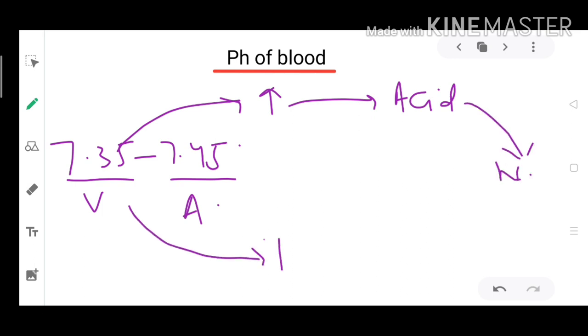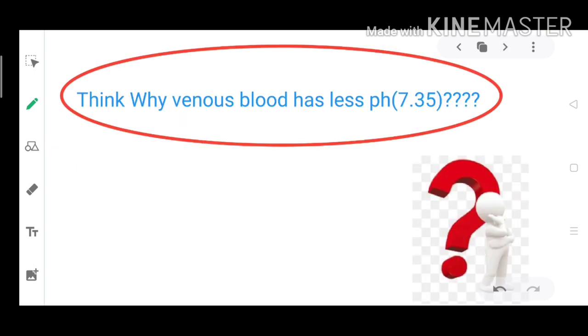And whenever pH decreases, body produces more base which brings pH back to normal. Think why venous blood has less pH than arterial blood.